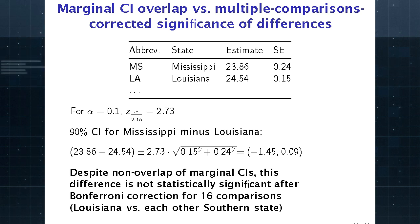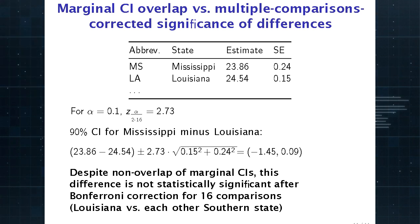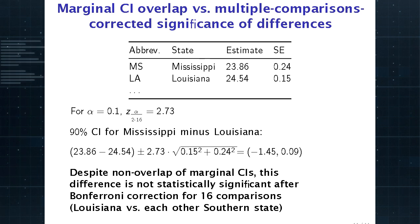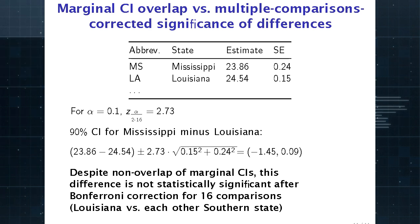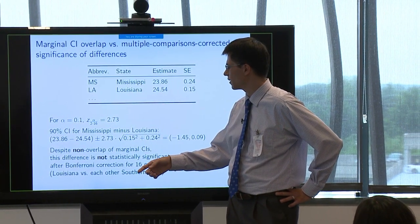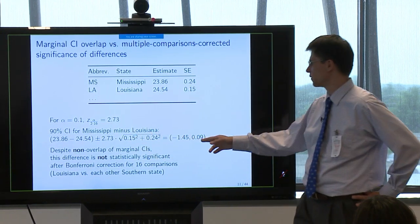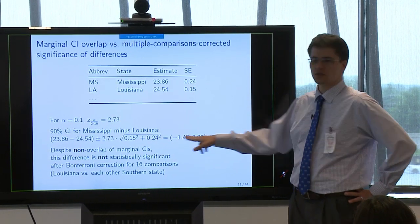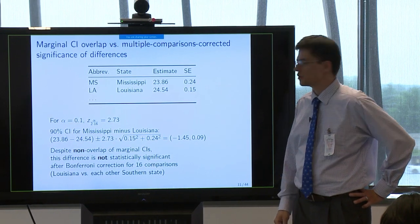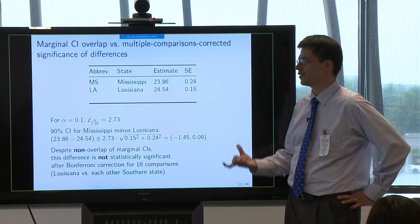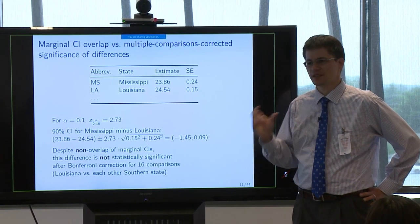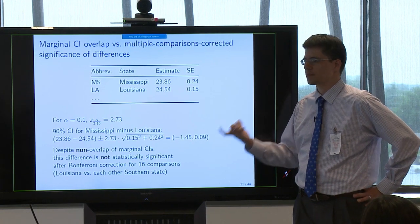On the other hand, if we want multiple comparisons corrections, we might note that we have 17 southern states, so we could compare Louisiana to 16 others. We apply a Bonferroni correction for those 16 possible comparisons, which inflates the z-score from about 1.6 to 2.7. Now the confidence interval for Mississippi minus Louisiana goes from minus 1.5 to 0.1 — it does include zero. So after accounting for multiple comparisons, we can no longer say that Mississippi and Louisiana are statistically significantly different.